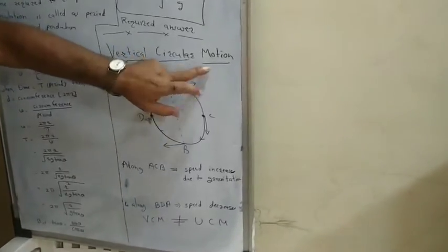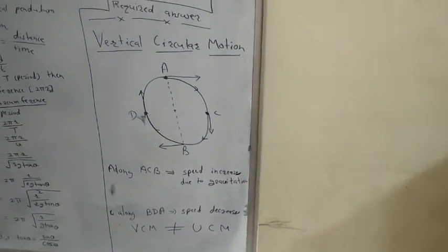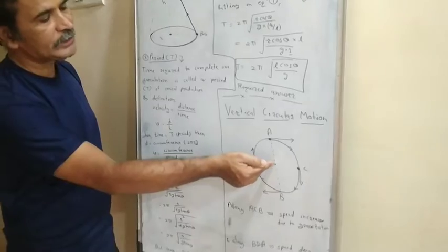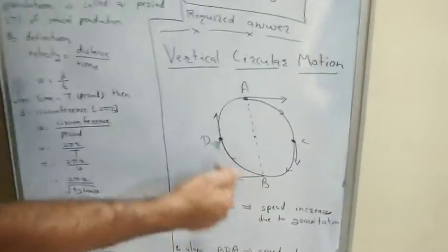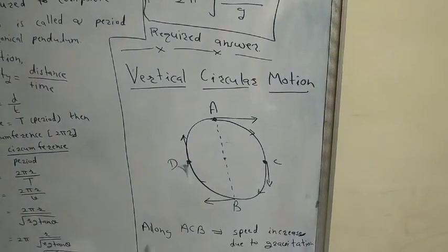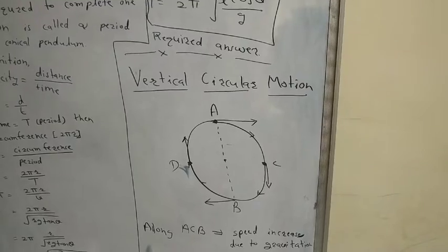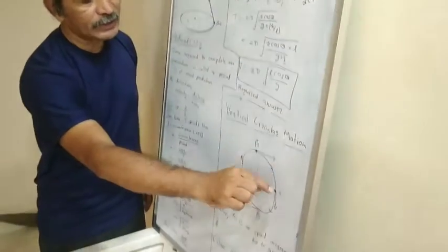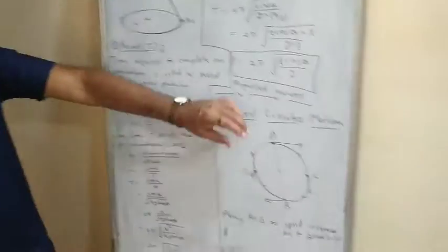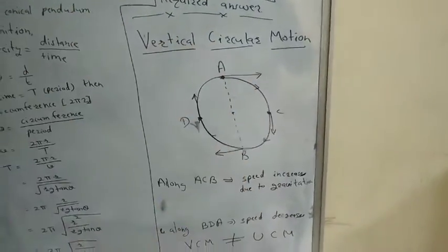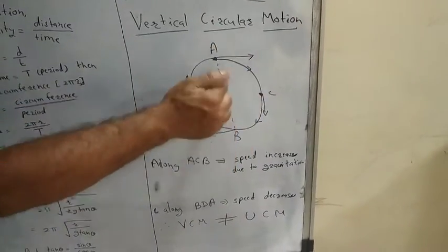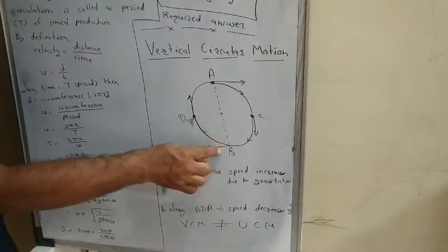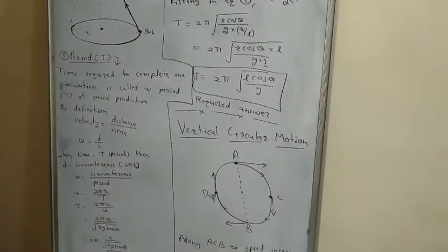To understand vertical circular motion, consider a rope with a piece of stone attached at one end, while the other end is held in the hand. When the stone is rotated in a vertical plane, we get vertical circular motion. When the body moves from point A to C to B (downward side), gravitational force acts on it and therefore the speed increases along path A–C–B.